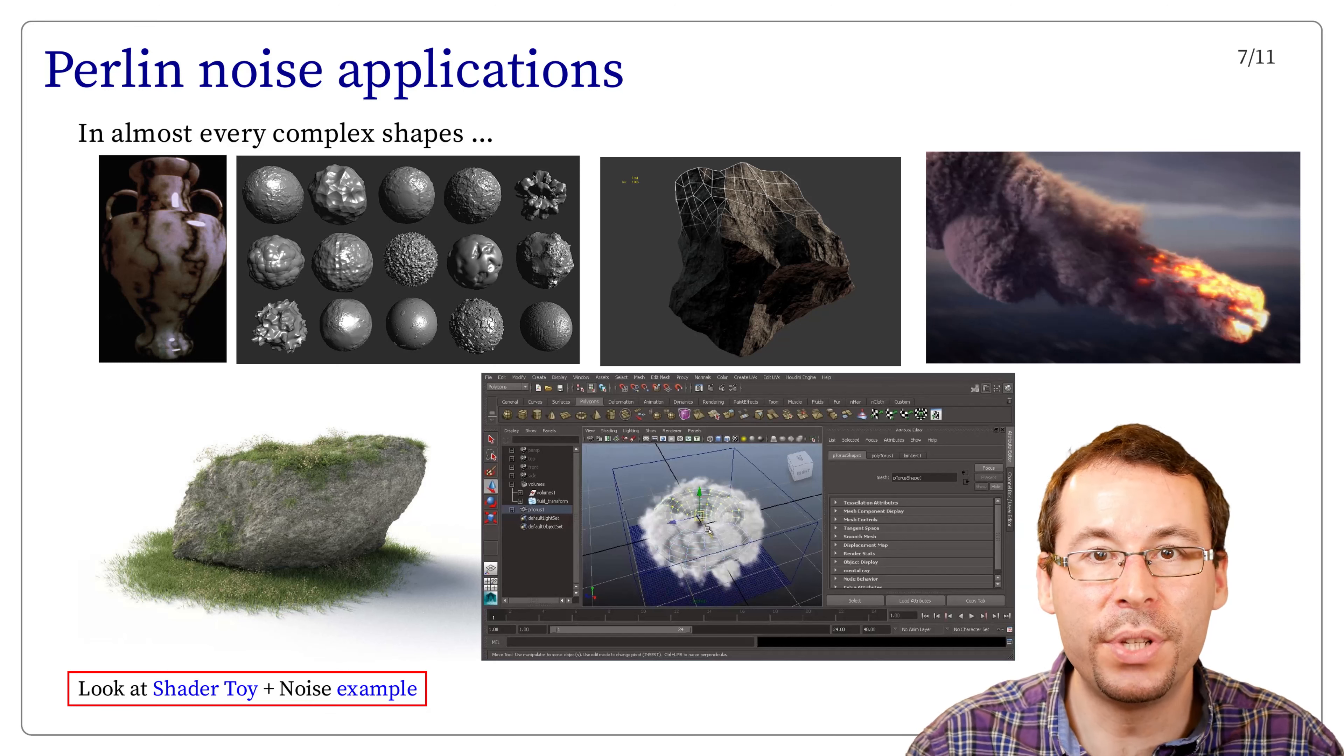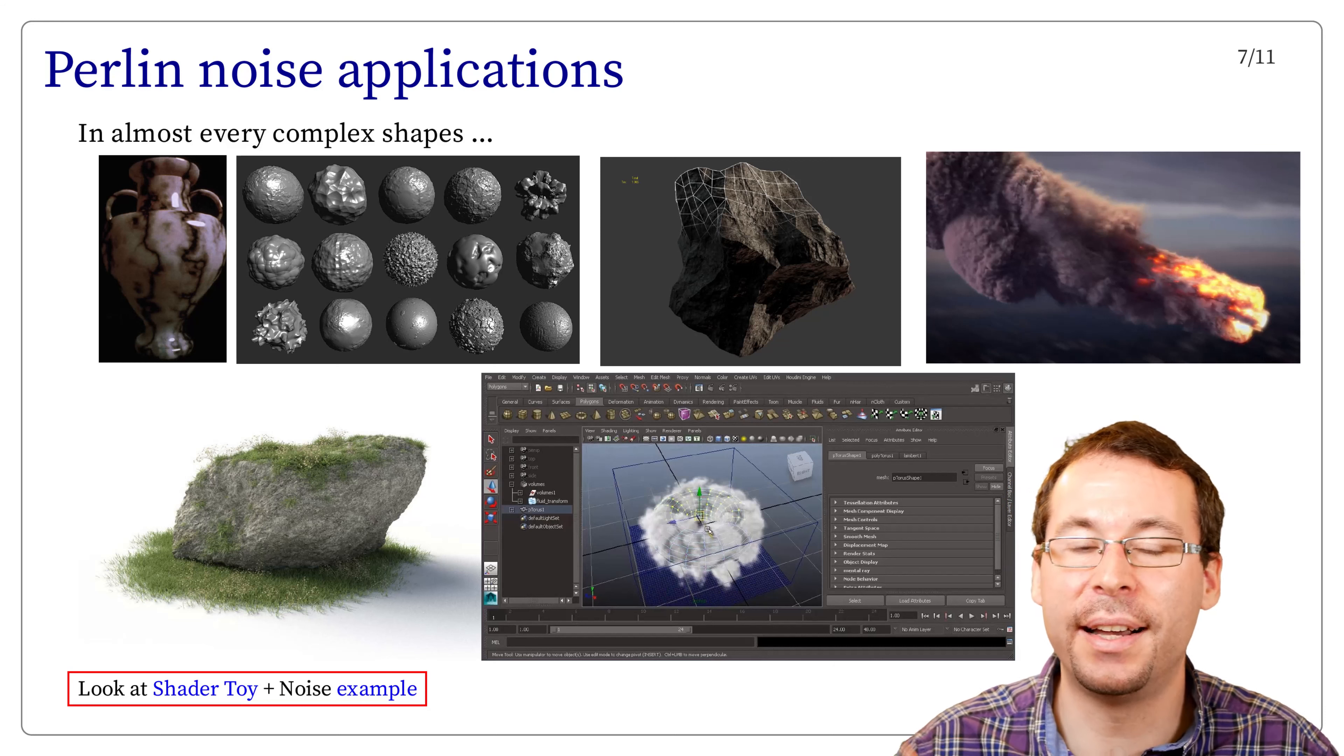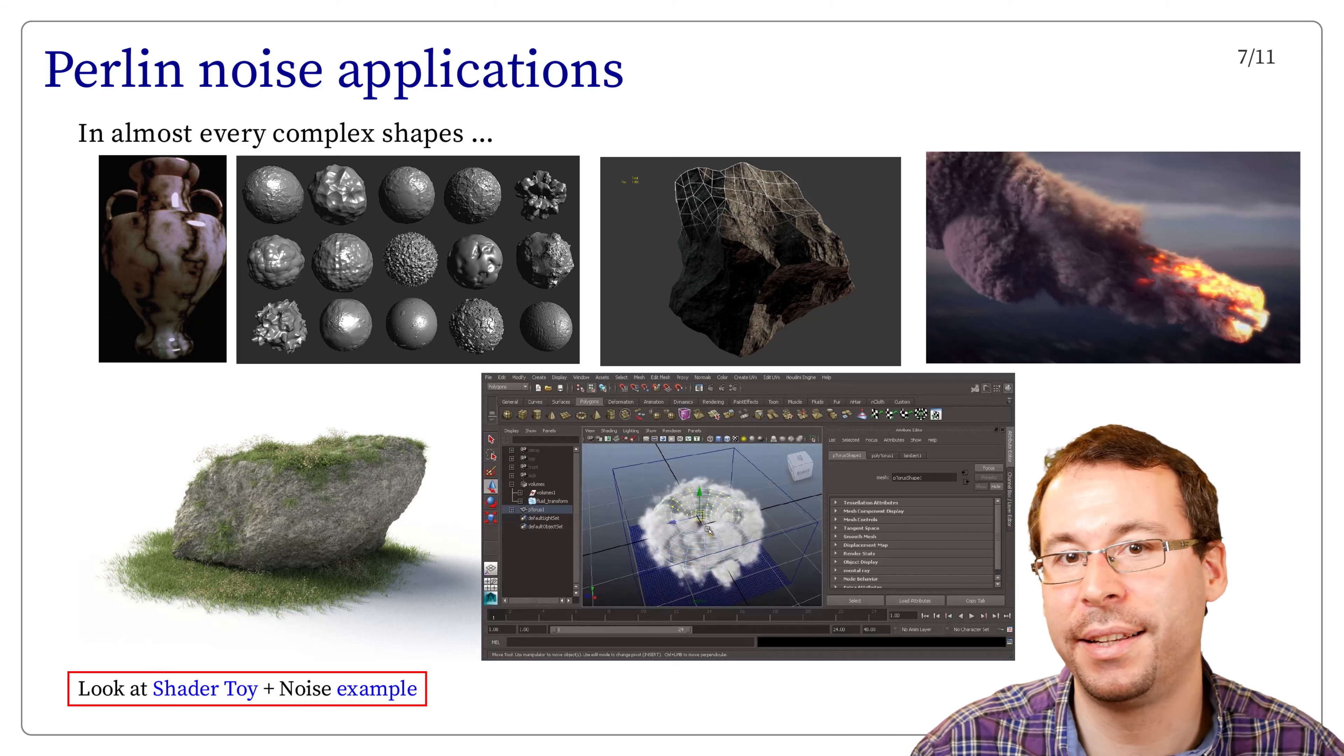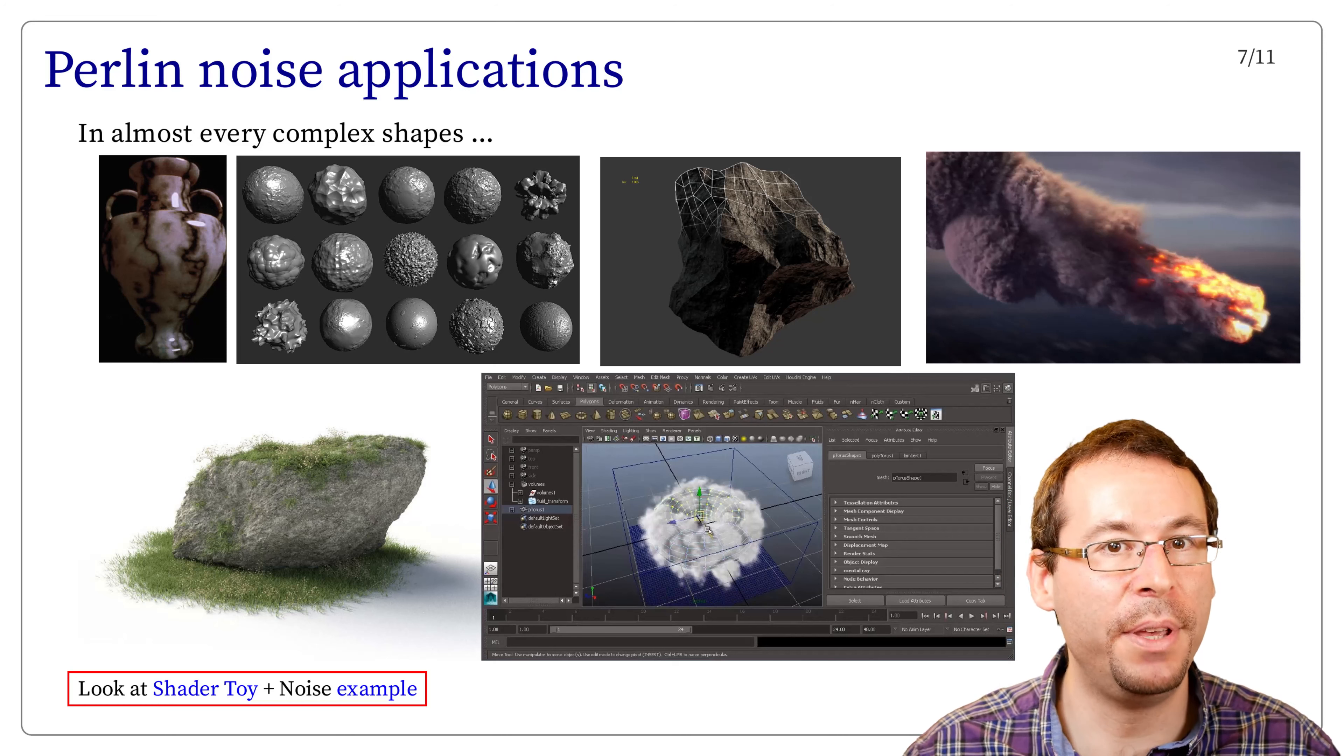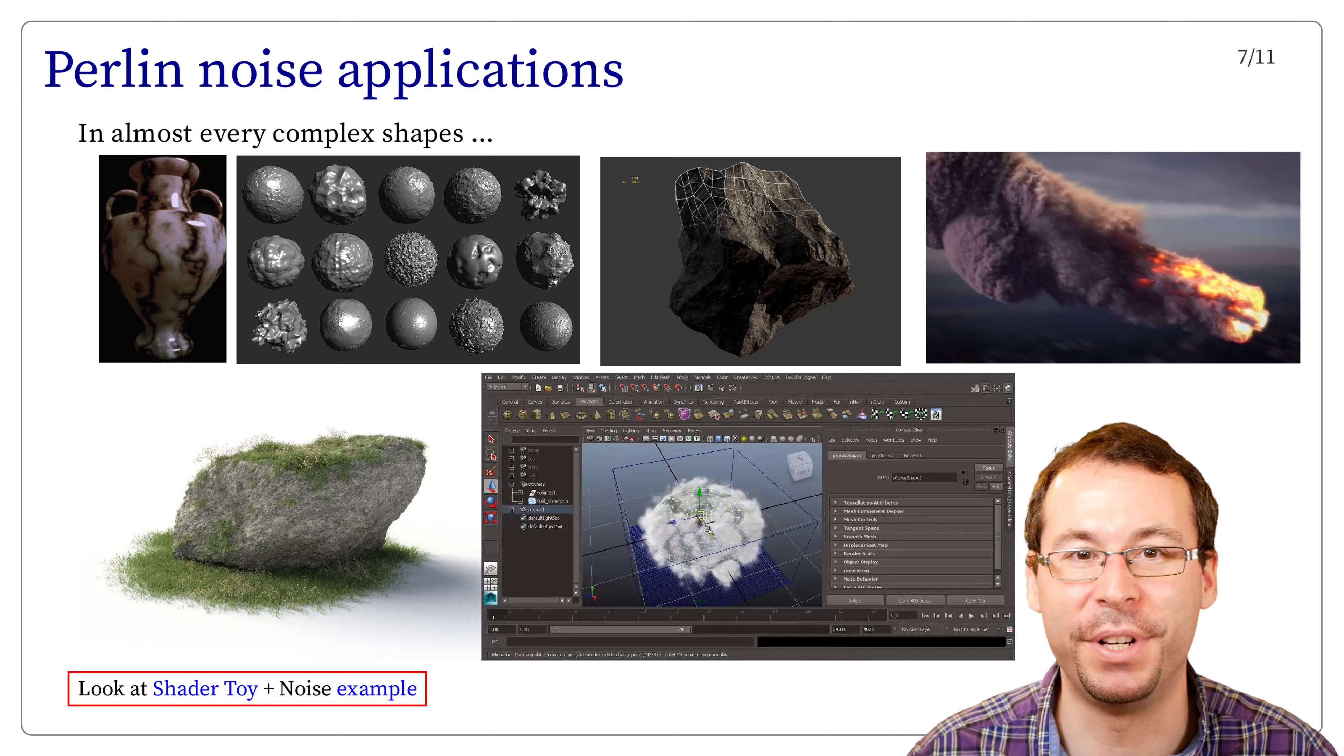If you want to see some examples, you can look at Shader Toy, which is a website with real-time shaders running on your graphics card, and type noise as keywords. Most of them will be variations of Perlin noise and are able to do impressive results.